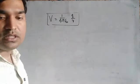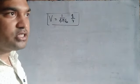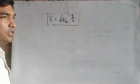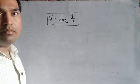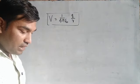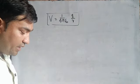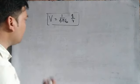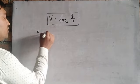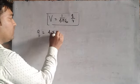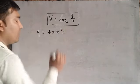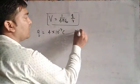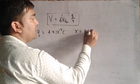Now we have to discuss a problem based on this formula. The question is: calculate the potential at point P due to a charge of 4 into 10 to the power minus 7 coulomb, located 9 centimeters away. So the charge q equals 4 into 10 to the power minus 7 coulomb, and r equals 9 centimeters.